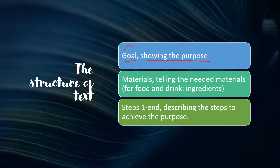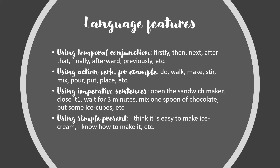The structure of the text: the first one is the goal, showing the purpose — it can be the title. Next, the materials, telling the needed materials. And the last is the steps, from step one until the end. These are the structure of procedure text. Language features: the first one is using temporal conjunctions like firstly, then, next, after...